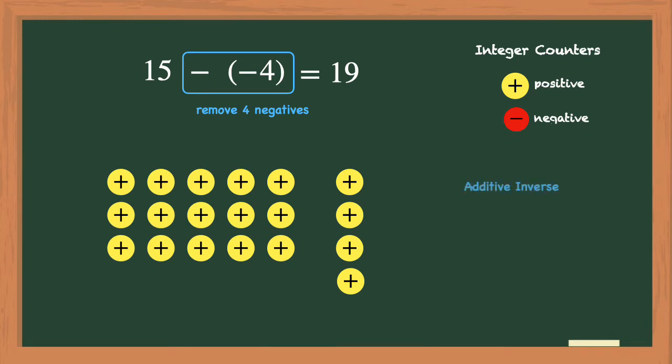If we had used additive inverse instead, it would have looked like this. We would keep the positive 15, then change the subtraction to addition, and then use the inverse or opposite of negative 4, which is positive 4. And positive 15 plus positive 4 is positive 19.